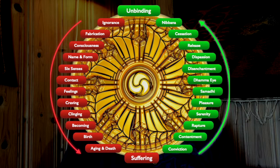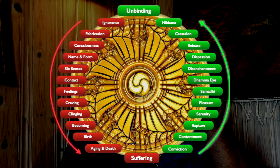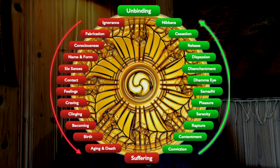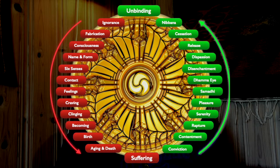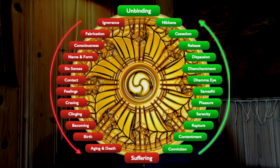Let's take a look at the process of dependent origination. The red symbols on the left side of the circle are dependent origination, and the green ones on the right are the Noble Eightfold Path. What's happening here is that we begin from ignorance to fabricate a certain type of consciousness, which is experienced in terms of name and form. This then programs our six senses to have contact with those objects defined by name and form, which creates feelings of pleasurable, unpleasurable, or neutral nature. That leads to craving for them or craving against them, whether we like or don't like something. And that leads to clinging. We become the things that we cling to, and that leads to birth.